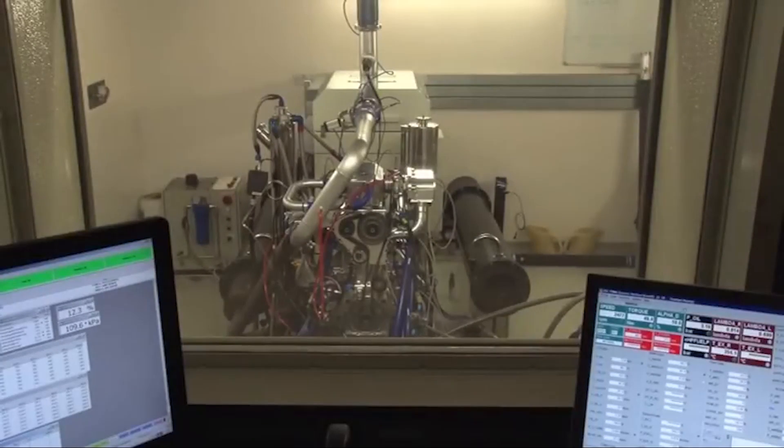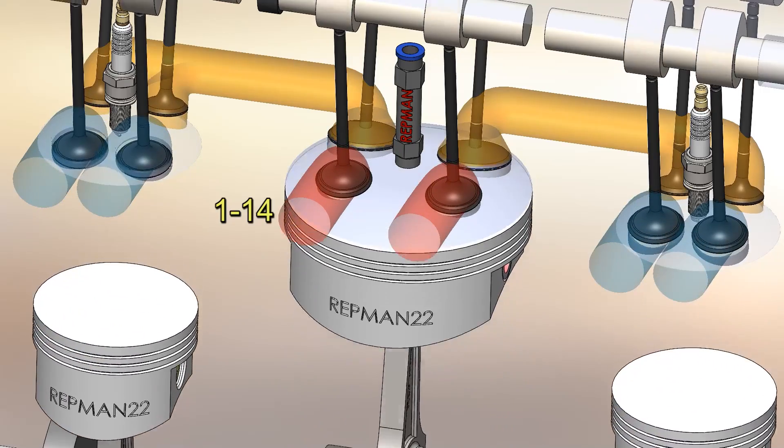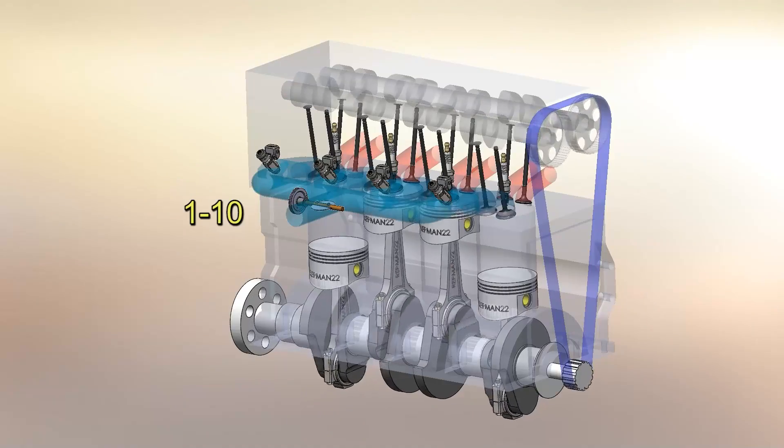In summary, in this five-stroke engine, with its two combustion cycles, it ends up having an expansion ratio of 1 to 14, while in a normal engine it's 1 to 10.